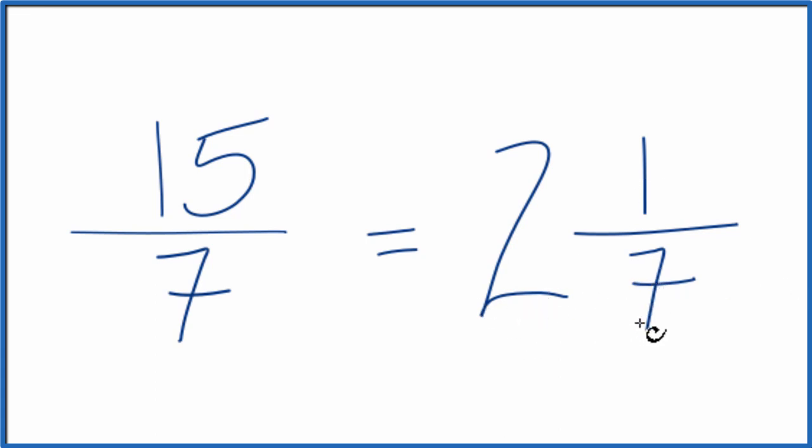You can check that. 2 times 7 is 14, plus 1. That gives us 15. We keep the denominator the same.